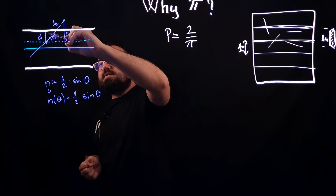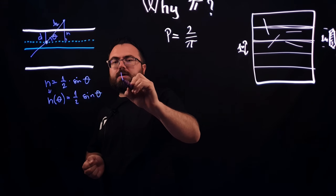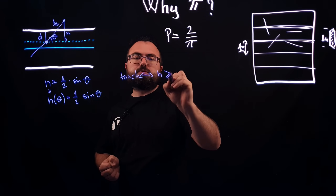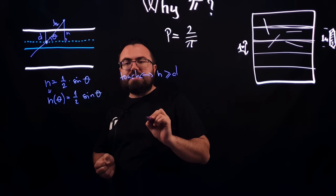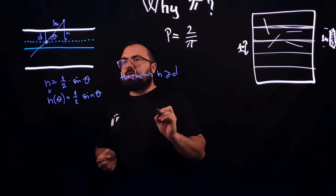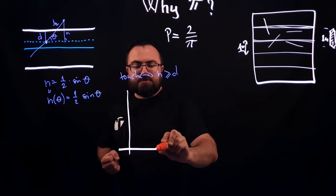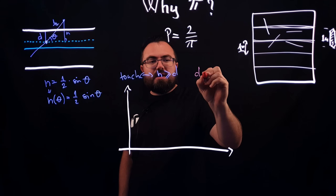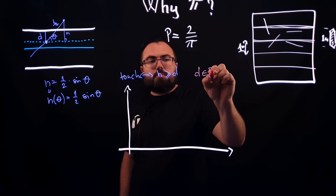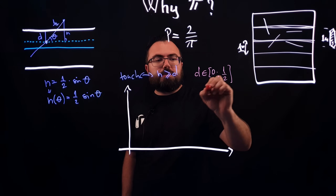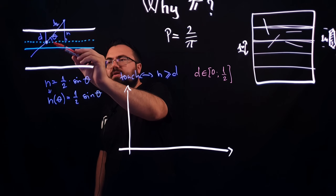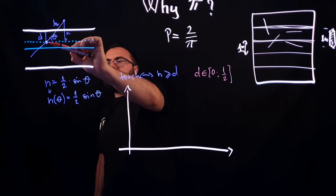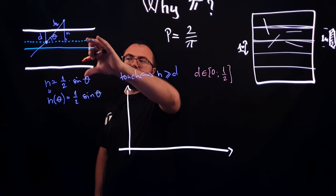The condition for the needle to actually touch the line is that H is greater than or equal to D. To visualize this, let's put these values on a graph. D ranges from 0 all the way to 1 over 2, because we're considering the midpoint to be in the upper half. If it falls in the lower half, the situation is symmetric.